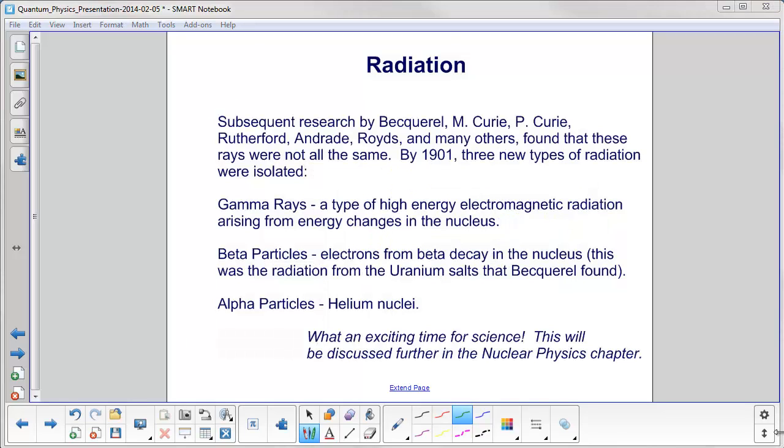Subsequent research by Becquerel, Marie Curie, Pierre Curie, Rutherford, Andrade, Royds, and many others found that these rays were not all the same. By 1901, three new types of radiation were isolated. Gamma rays, a type of high-energy electromagnetic radiation arising from energy changes in the nucleus, much more energetic than X-rays.